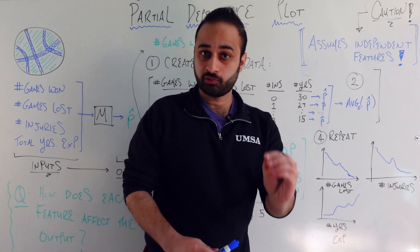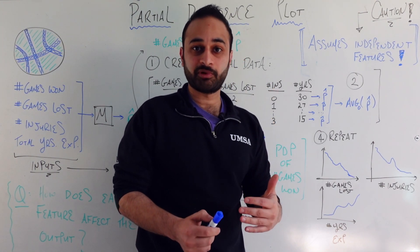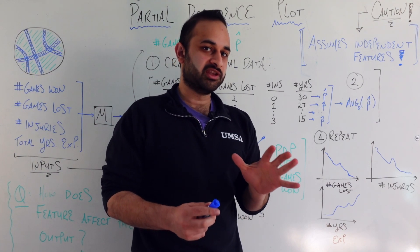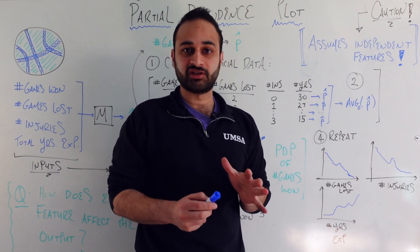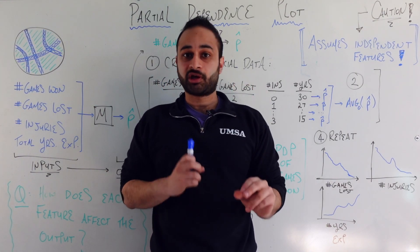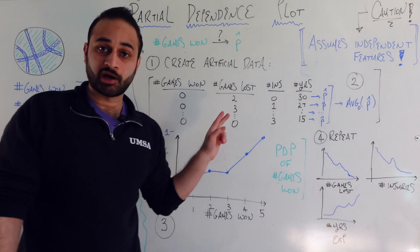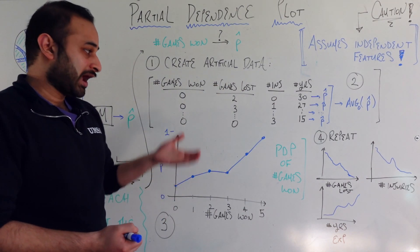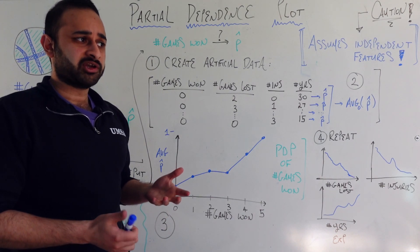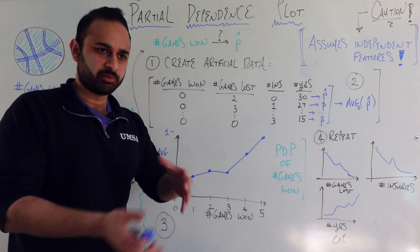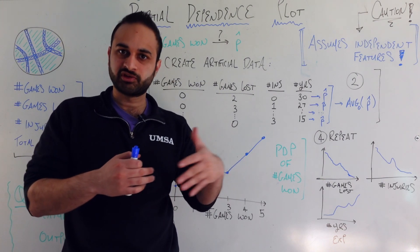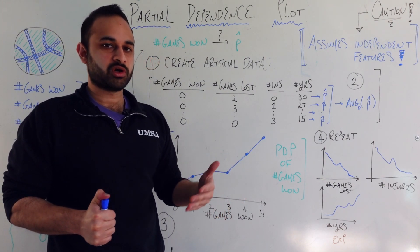Now let's talk about the big disadvantages, which I really want you to take home. The biggest one by far is that partial dependence analysis assumes your features are independent. Consider games won and games lost in the season so far. If all teams are at the same point in the season, the sum of those two values should be roughly the same for every team, since they've all played a similar number of games and each game results in either a win or a loss.